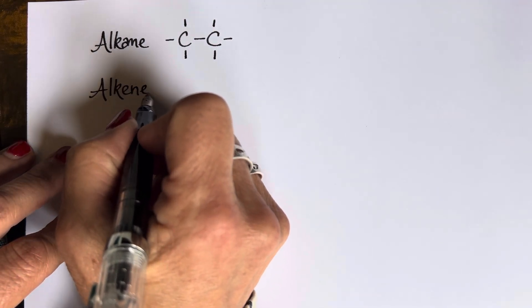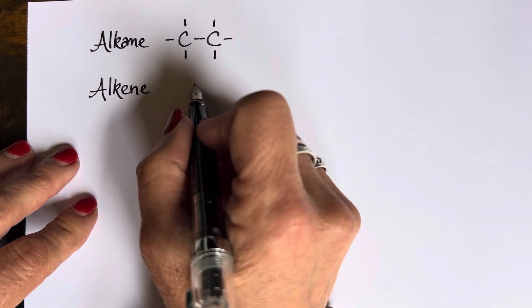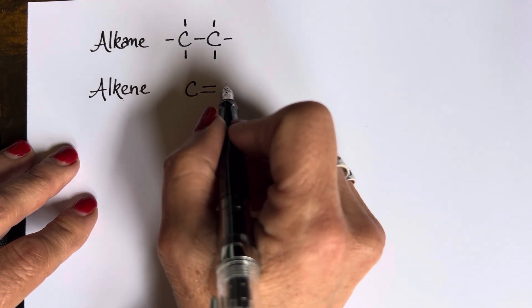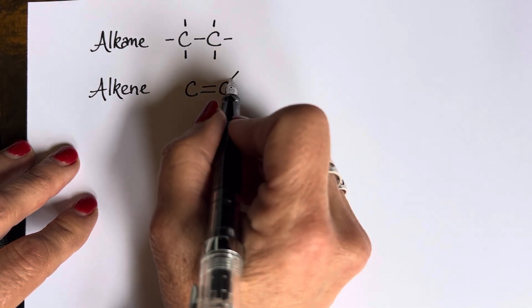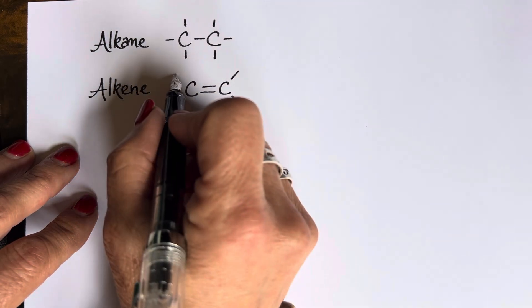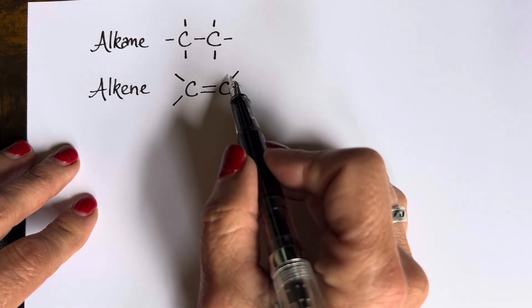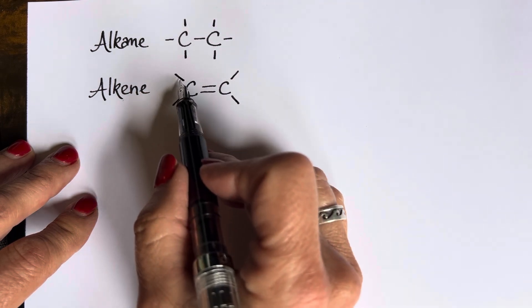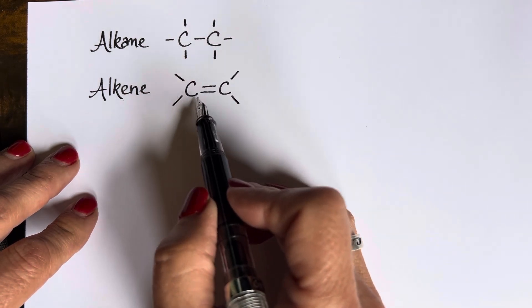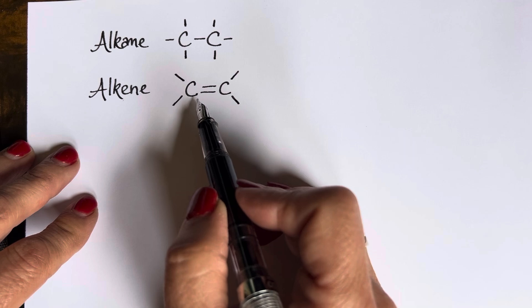Our alkene has a double bond. And since it's got a double bond between the carbons, that means it can only have two single bonds in order for the carbon to maintain its octet.